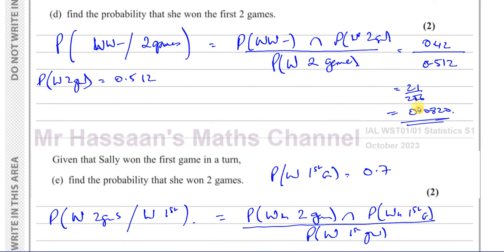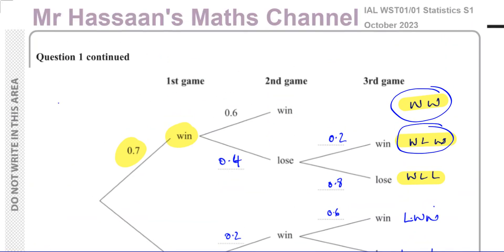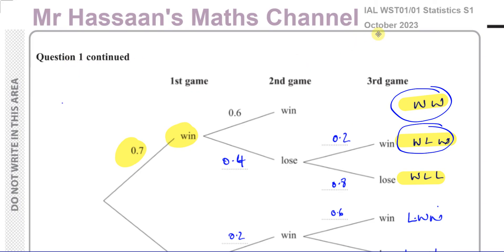That completes question number one from the October 2023 Statistics S1 paper from Edexcel International A-Level. Other questions from the paper can be found in the playlist at the end of this video, as well as a playlist on probability topics. You can subscribe to the channel and find a guide on how to use it. Thank you for watching and see you soon.